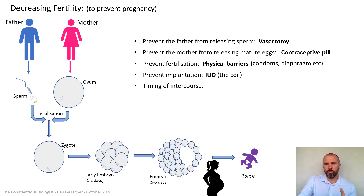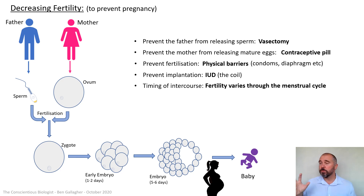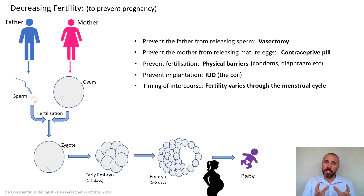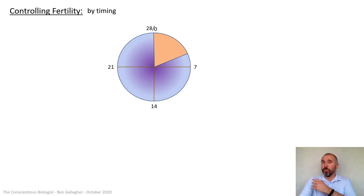The last method we can talk about for decreasing fertility is the timing of intercourse, because fertility varies massively through the menstrual cycle. There are times during the cycle where a couple are very likely to get pregnant and times where there's virtually no chance. This method can also be used for increasing fertility. Take a screenshot of the full list before we move on. Controlling fertility by timing — note the title has changed to 'controlling' rather than 'decreasing' because this method can work both ways.